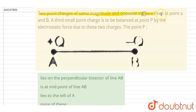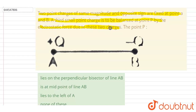Hello. Two point charges of same magnitude and opposite sign are fixed at points A and B. A third small point charge is to be balanced at point P by the electrostatic force due to these two charges. We want to find the position of point P.